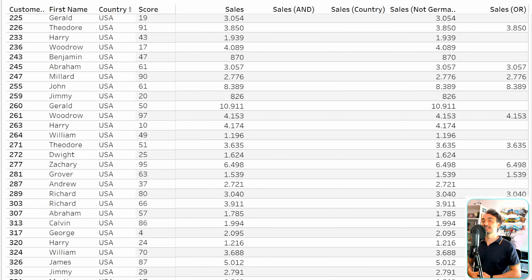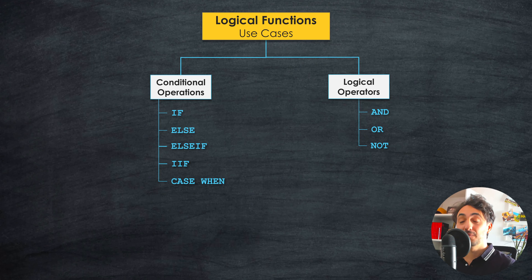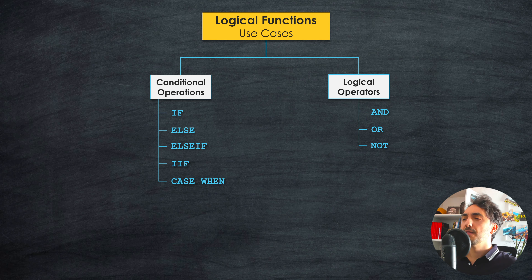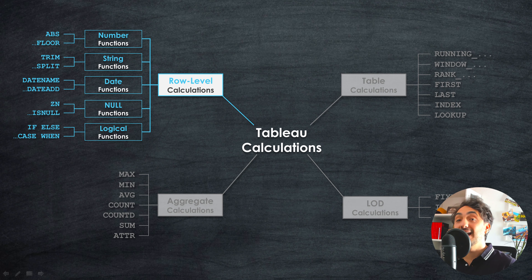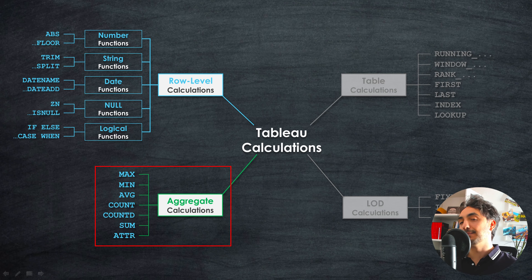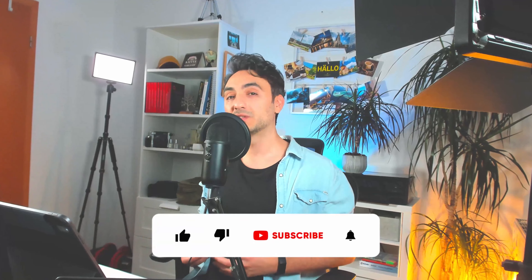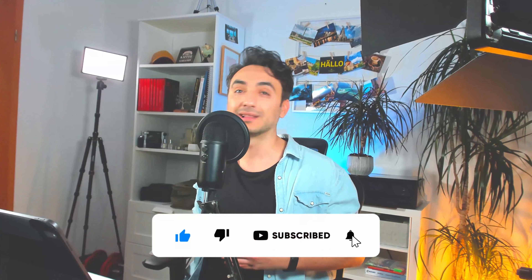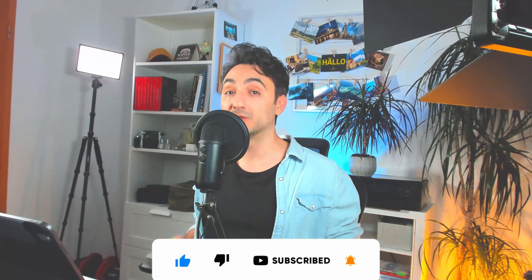That's it for the three logical operators — AND, OR, and NOT. With this we've covered all eight logical functions in Tableau, which are really important for making data-driven decisions. This also completes the section on row-level calculations, covering around 40 Tableau functions. Next we'll learn about aggregate calculations in Tableau. If you like this content, please like, comment, and support the channel. Thank you for watching!